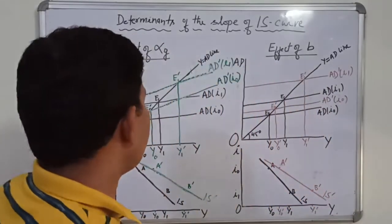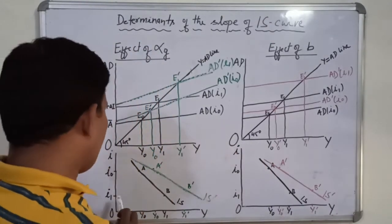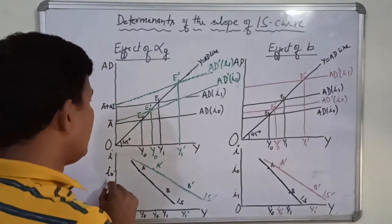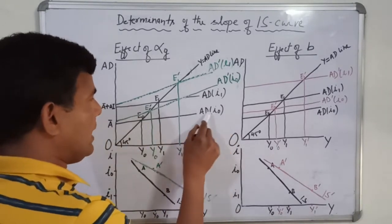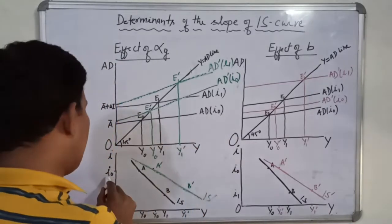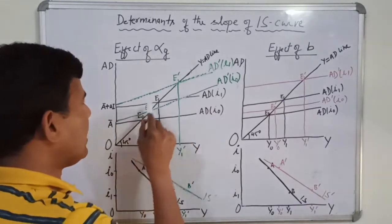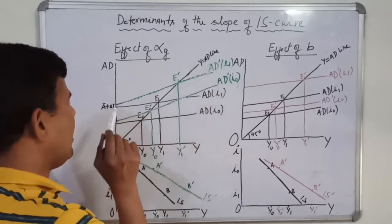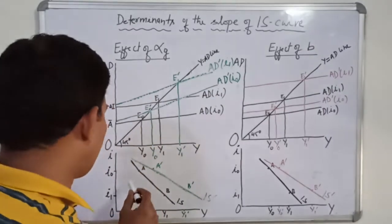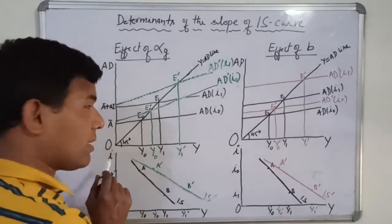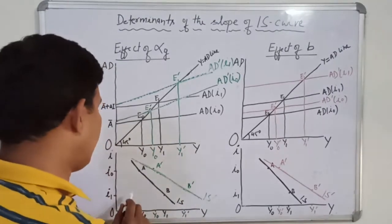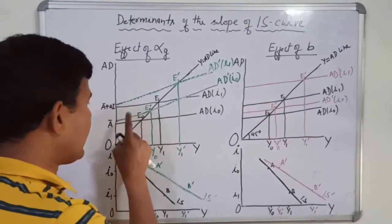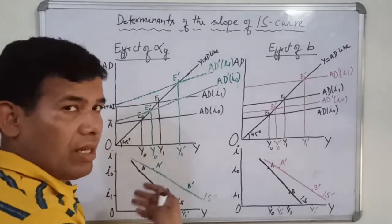As you know how we derive IS curve — we assume a specific level of interest rate, say I0. At this interest rate, your aggregate demand is AD corresponding to I0. At I0 interest rate, the equilibrium level of income we get in this diagram at the intersection point of AD and the 45-degree line, at E0. So E0 gives equilibrium level of income Y0. The combination of Y0 and I0 is point A, at which the goods market is in equilibrium.